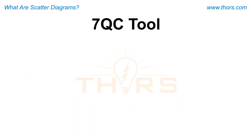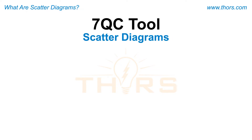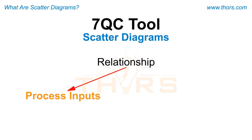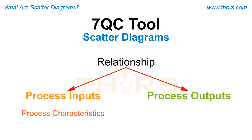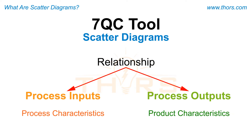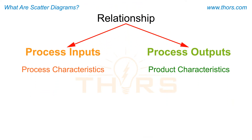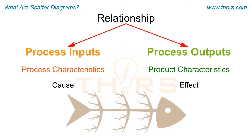As a 7QC tool, scatter diagrams are used to determine if a relationship exists between the inputs to the process, or process characteristics, and the outputs from a process, or product characteristics. They also help identify the presence of potential cause and effect relationships for effective problem solving.